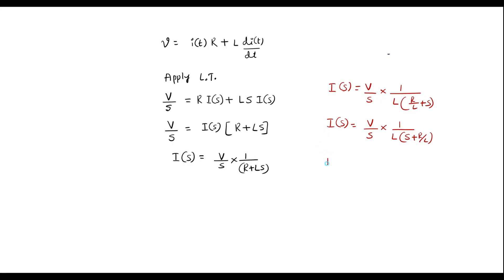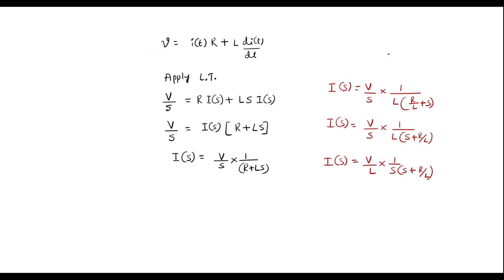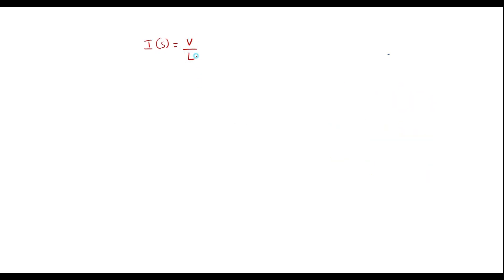Or I can represent it as I(s) is equal to V/L into 1 over s·(s + R/L). Here V/L is a constant, I will keep it as it is. Now I will try to simplify this expression by applying the partial fraction method.